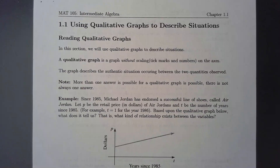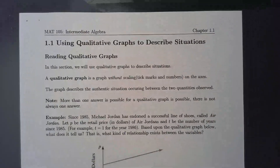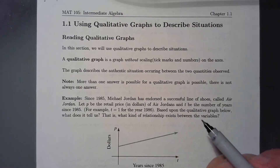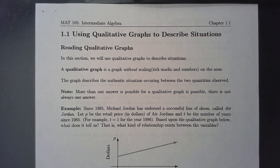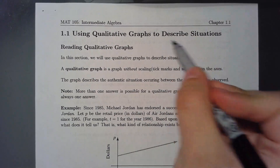In this section we're going to look at qualitative graphs to describe situations. One of the fundamental things we look at is relationships between two variables, or relationships between two situations. That's what we mean by describing situations here.